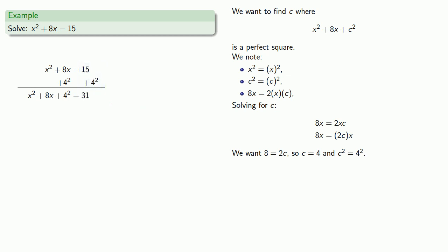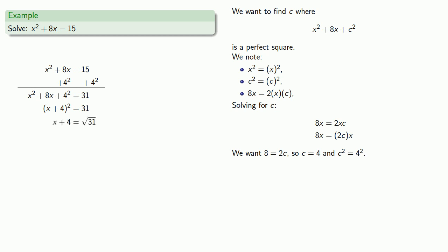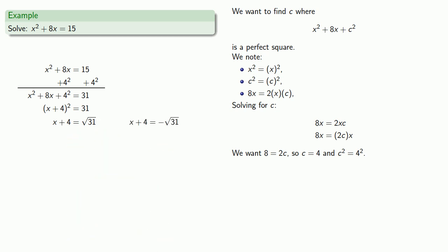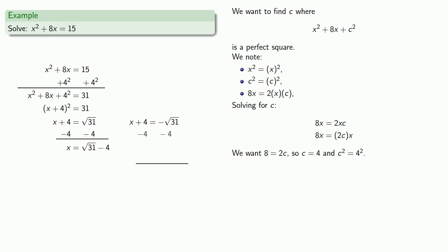The reason we did this was to make sure our left hand side was a perfect square, and it is — the left hand side is the square of x plus 4. Now we have a power equation: square equals number. So x plus 4 is either the principal square root of 31 or negative the principal square root of 31. Solving each equation separately gives us two solutions.